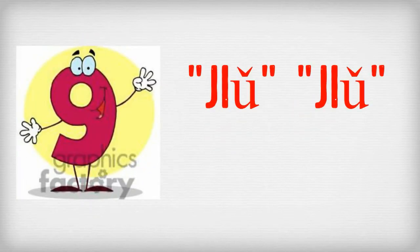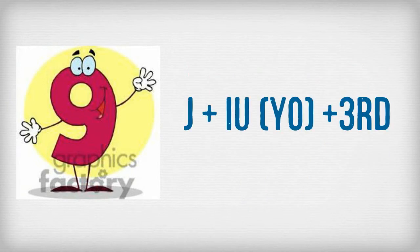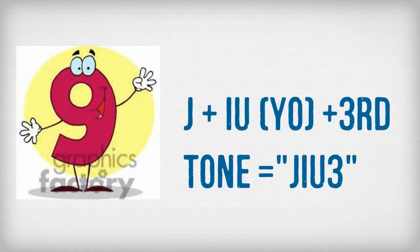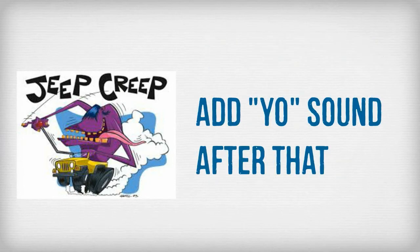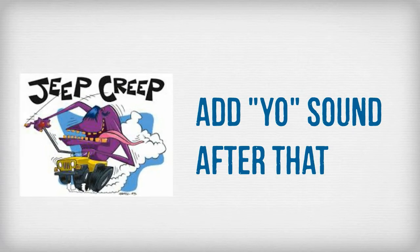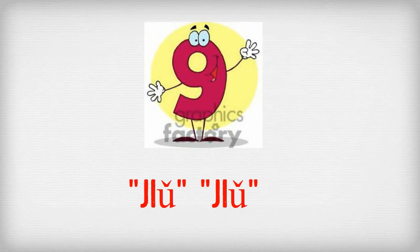Number 9 is JIU. There is a strong YU sound at the end. The sound of the spelling is JI-YU — JIU. Think of the J sound which is like a jeep, and then add the YU sound after that, plus the third tone. How do you say number 9 again? JIU.